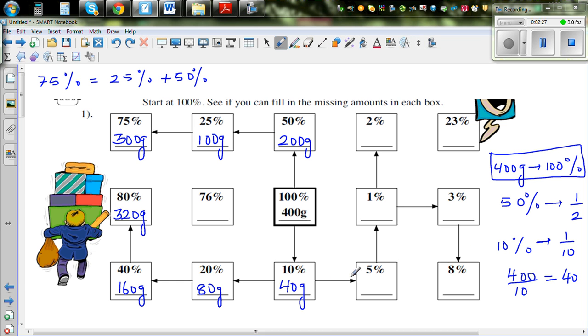From 10% you can find 5%, because it's half of 10%, so this is 20 grams. Now from 5% you can find 1%, because 1% is 1 fifth of 5%. So you have to find 1 fifth of this, so 20 divided by 5.